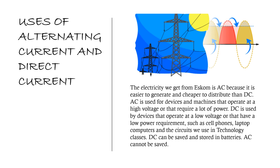DC is used by devices that operate at a low voltage or that have a low power requirement, such as cell phones, laptop computers, and the circuits we use in technology classes. DC can be saved and stored in batteries, but AC cannot be saved.